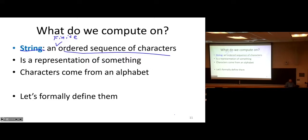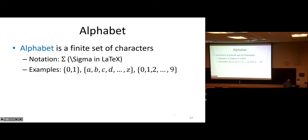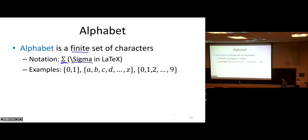A string is an ordered sequence of characters. We're going to be using it to represent things, and these characters come from something we call an alphabet. Let's formally define strings. The first thing to define is an alphabet. An alphabet is a finite set of characters — it must always be finite. That's all it is. Typically, when we denote the alphabet, we use the Greek letter capital sigma. In LaTeX, you write that as backslash capital S — \Sigma.